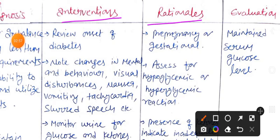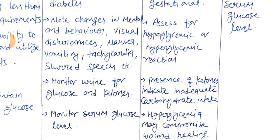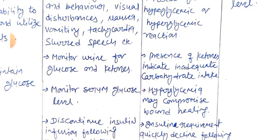Interventions with rationale for diagnosis one: First, review onset of diabetes — whether pre-pregnancy or gestational. Next, note changes in mental and behavioral status, visual disturbances, nausea, vomiting, tachycardia, and slurred speech — rationale: assess for hypoglycemic or hyperglycemic reaction. Next, monitor urine for glucose and ketones — rationale: presence of ketones indicates inadequate carbohydrate intake. Next, monitor serum glucose level.